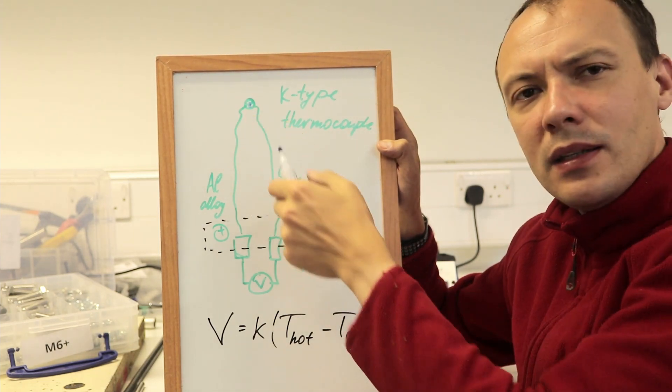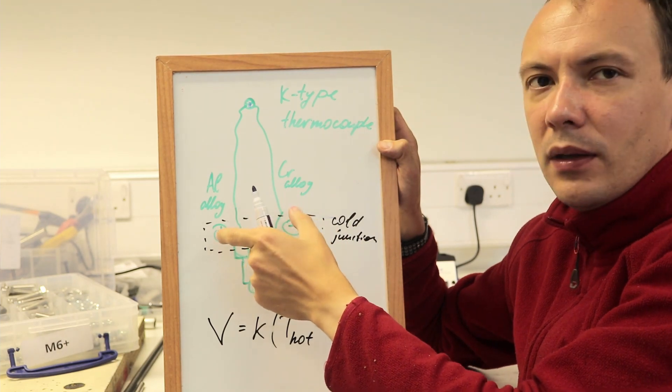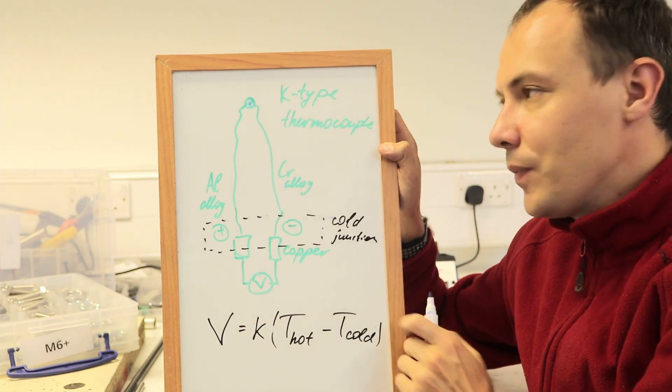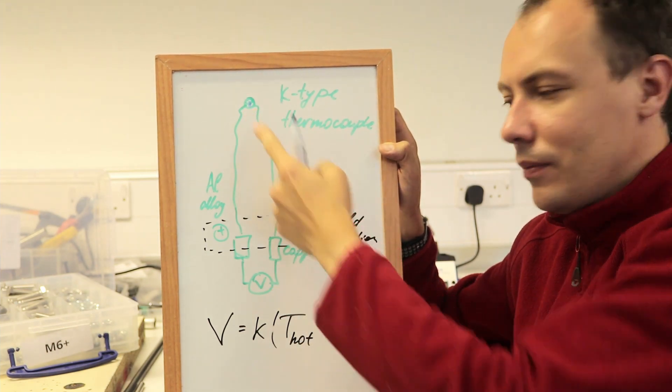These two wires go into the measuring device. They are connected to copper and measure temperature.